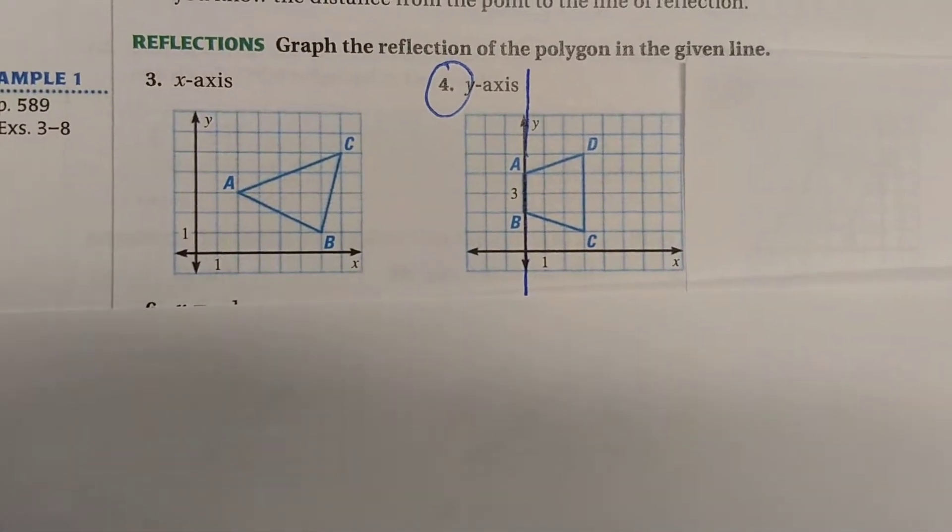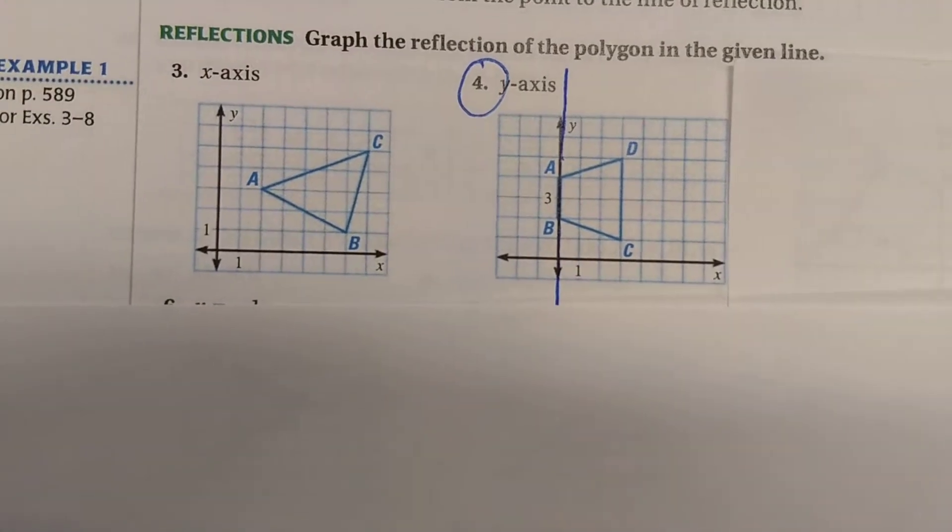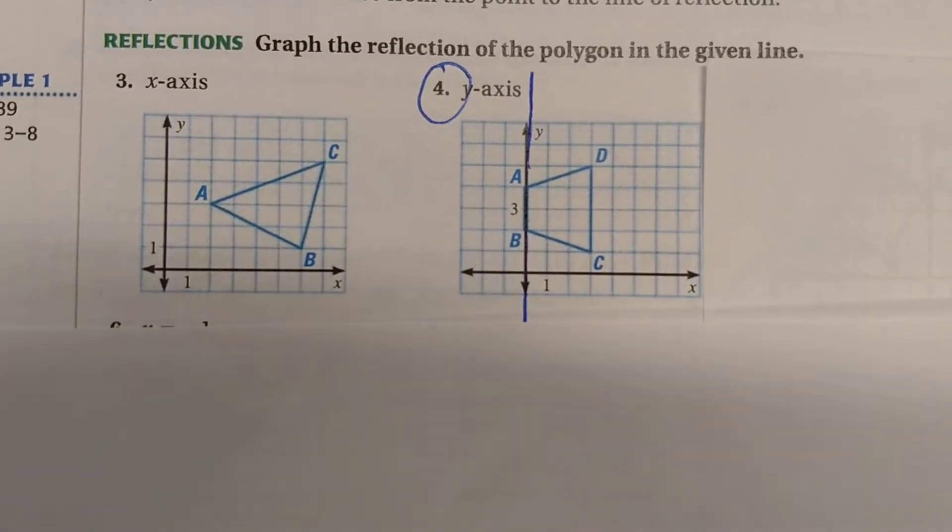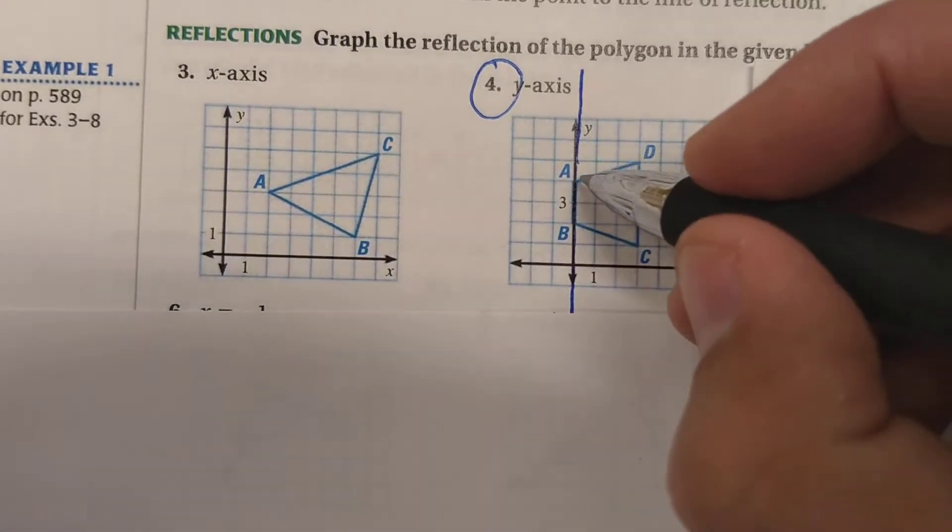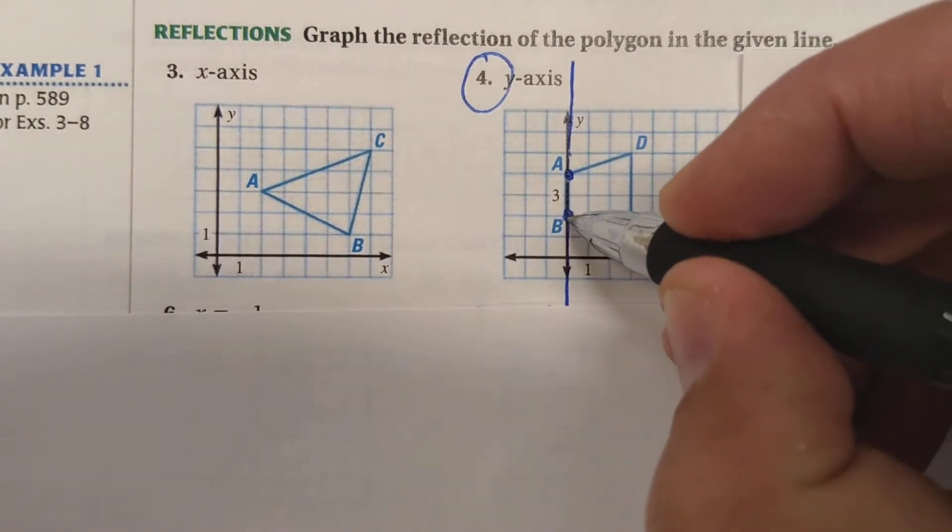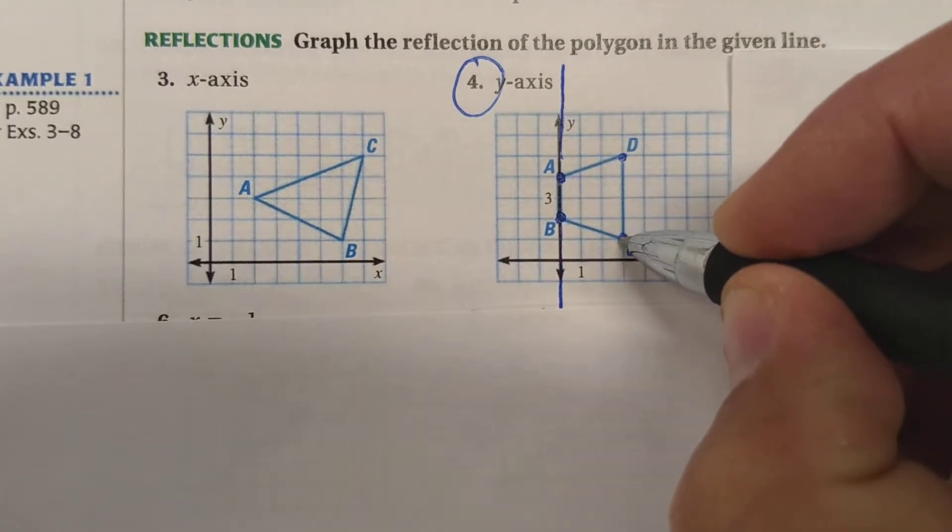Now to actually draw that reflection, remember you're going to go step by step based on the vertices, the corner points of the image. So I've got four corner points, A, B, C, and D.